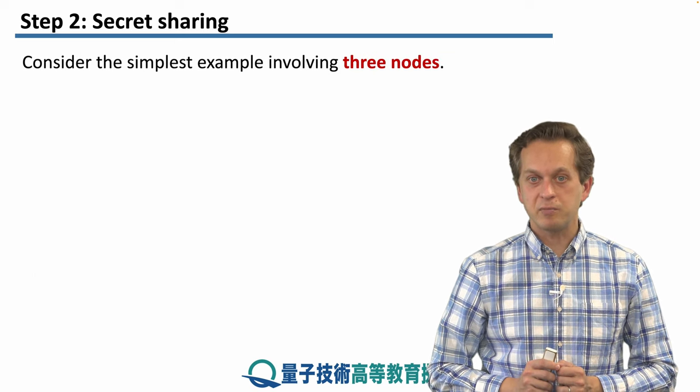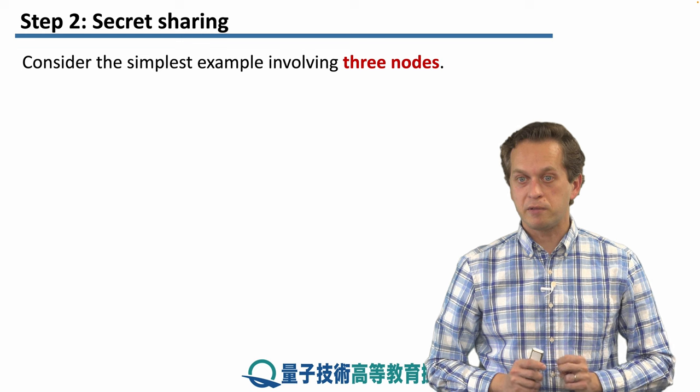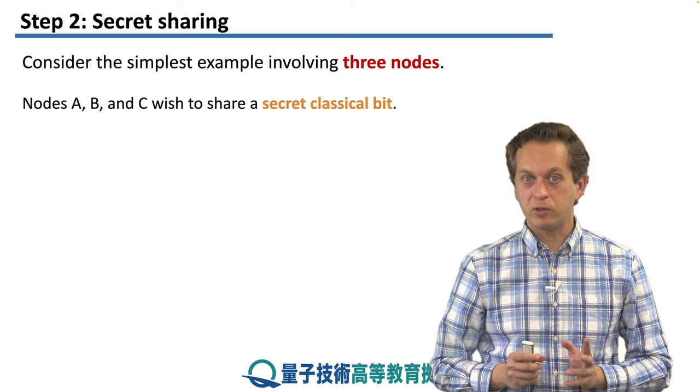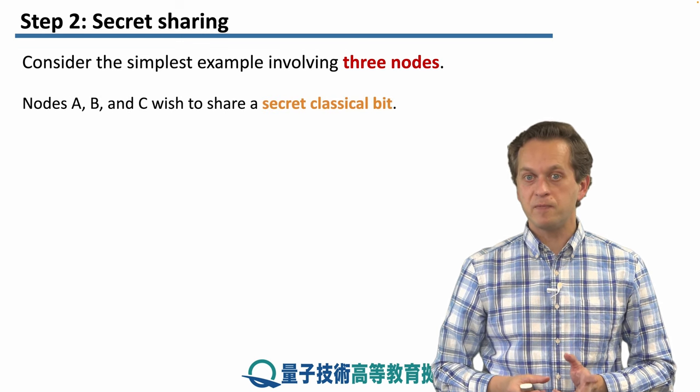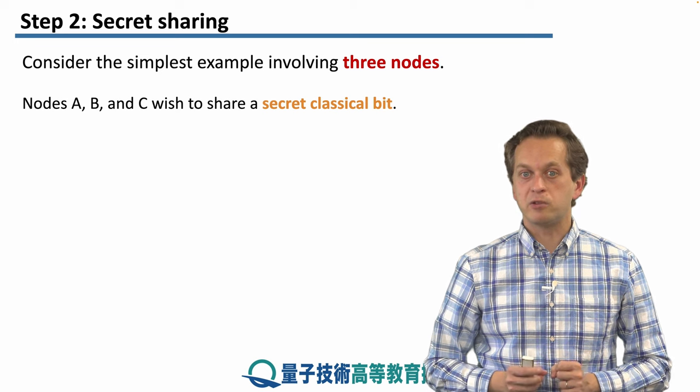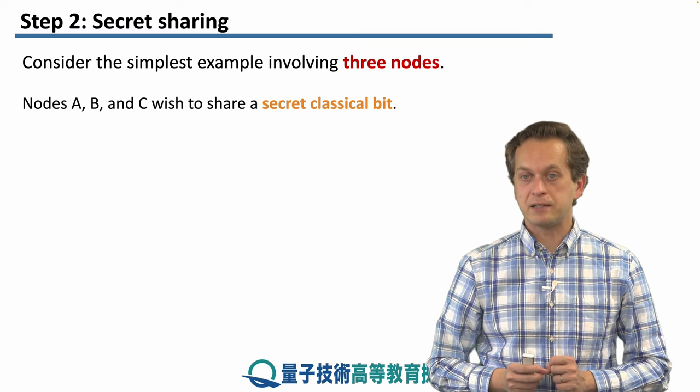In here we're going to consider the simplest case involving only three nodes. We're going to call them nodes A, B, and C.